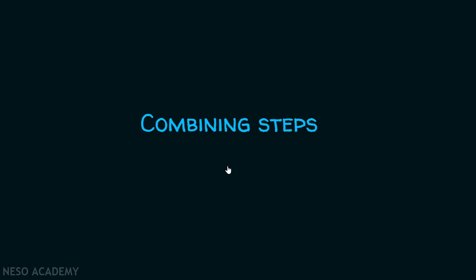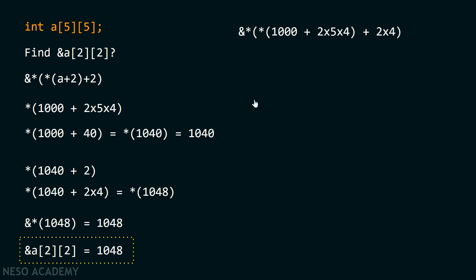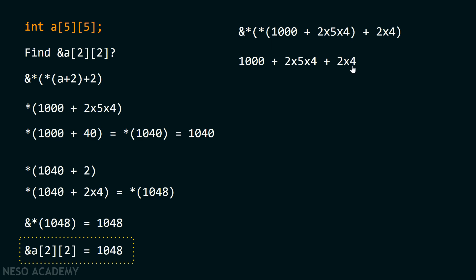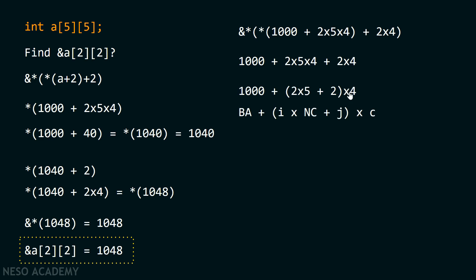Now let's combine all these steps to understand how the formula works. After combining, I got: *(A + 2) can be replaced by *(1000 + 2 × 5 × 4), and the final expression becomes 1000 plus (2 × 5 × 4) plus (2 × 4). Taking 4 common from the last two terms gives: 1000 + (2 × 5 + 2) × 4. This indicates the base address is 1000.